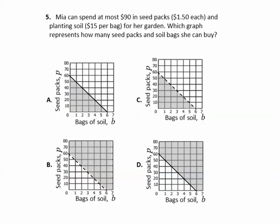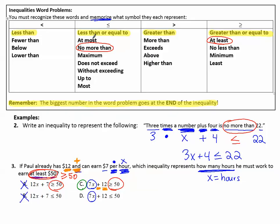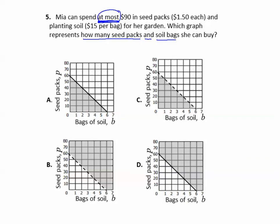Let's take a look at one more example. Number five. Mia can spend at most $90 in seed packs, $1.50 each, and planting soil, $15 per bag for her garden. Which graph represents how many seed packs and soil bags she can buy? First of all, I notice this clue word, at most. Remember our list of words that we need to memorize? At most is the less than or equal to symbol. So I'm going to remind myself that I need less than or equal to 90. So just using the less than or equal to, I don't have to read anything else in the problem.